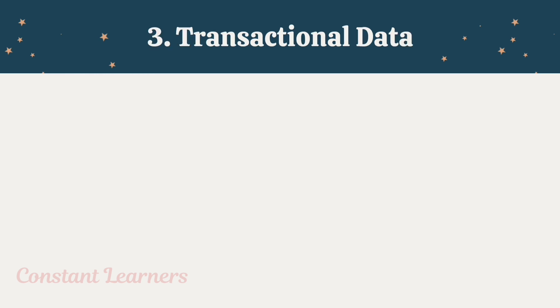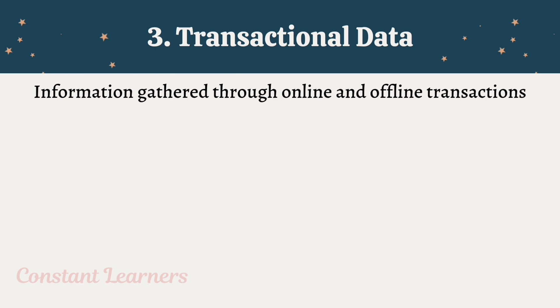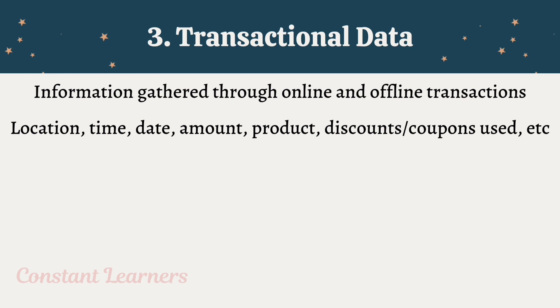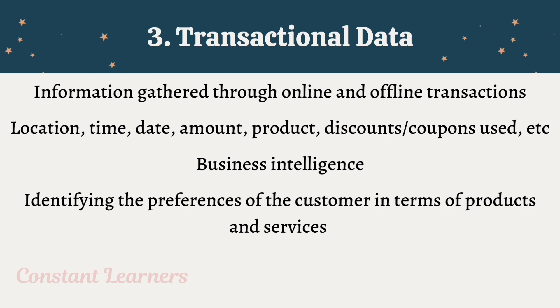The third source is transactional data — information gathered through online and offline transactions while making purchases or investments. This includes data like location where a card was swiped, time, date, amount, which product was purchased, and what discounts or coupons were used. Transactional data is the key source of business intelligence and can play a vital role in identifying the preferences of customers in terms of products and services they might be using, helping businesses identify what people are actually investing their money and time in.